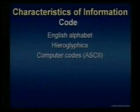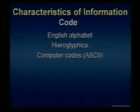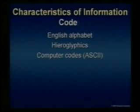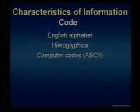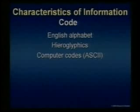So let's look at the characteristics of information — we're still building. The first characteristic is code. All information has a code. The English alphabet has a code. Hieroglyphics have a code. And for you computer people — ASCII. All of those have codes.